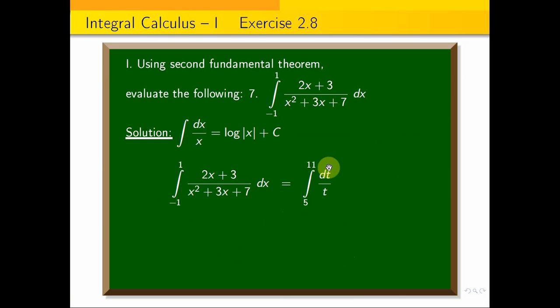Applying the formula, the simplification equals log t evaluated from 5 to 11. The modulus is stable and positive: log 11 minus log 5. Using log m minus log n equals log(m/n), we get log(11/5). This is the answer.